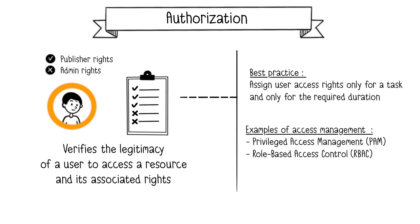Next, there is authorization, which involves checking a user's legitimacy to access a resource and the specific level of authorization, determining the actions that person can perform on a resource. This limits how a resource can be used by a user. Rights can be assigned to a collaborator and adjusted based on their situation, such as a change in position or departure. Best practice in access management is applying the principle of least privilege, assigning users' access rights only to the necessary resources for a task, and only for the required duration. This reduces the risk of data breaches, since only authorized users access sensitive data. Two common authorization approaches are privileged access management and role-based access control.